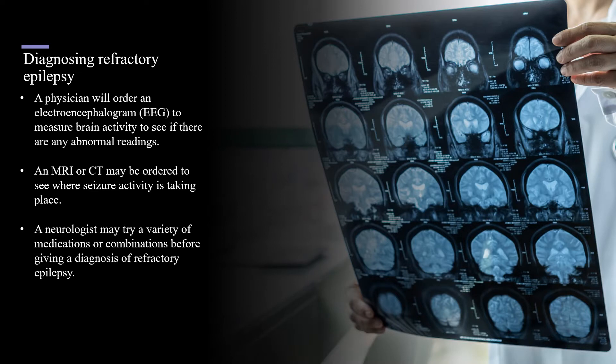When diagnosing refractory epilepsy, a physician will order an EEG to measure brain activity to see if anything abnormal is taking place. An MRI or CAT scan may be ordered as well to see if they can locate where the seizure activity is taking place. A neurologist may try a variety of medications or combination of medications before giving a diagnosis of refractory epilepsy.